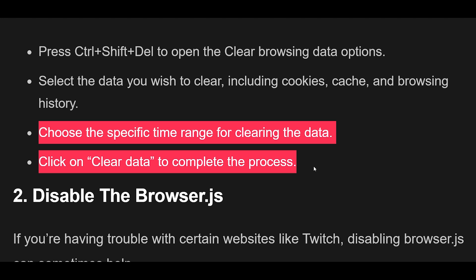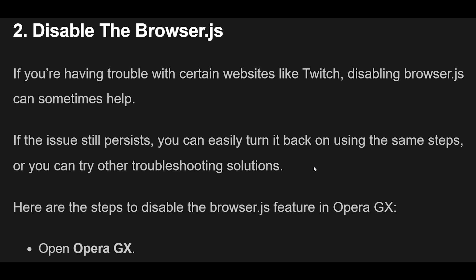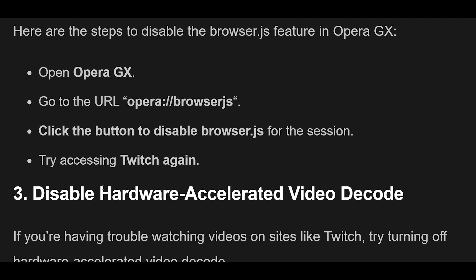2. Disable the Browser.js. If you're having trouble with certain websites like Twitch, disabling Browser.js can sometimes help. If the issue still persists, you can easily turn it back on using the same steps, or you can try other troubleshooting solutions. Here are the steps to disable the Browser.js feature in Opera GX.